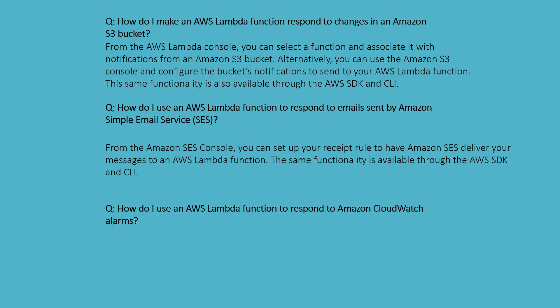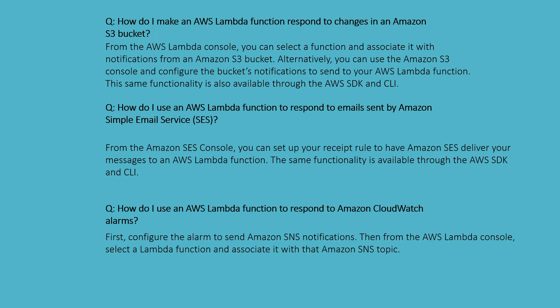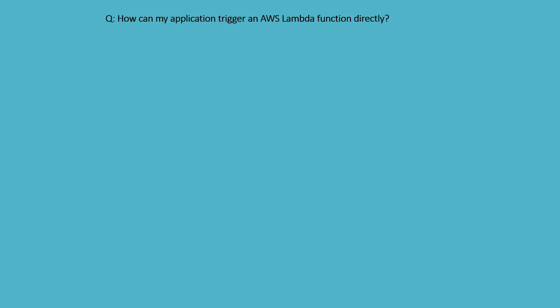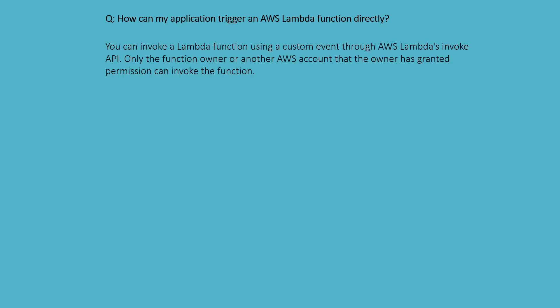How do I use an AWS Lambda function to respond to AWS CloudWatch alarms? First, configure your alarms to send SNS notifications. Then, from the AWS Lambda console, select the Lambda function and associate it with the Amazon SNS topic.